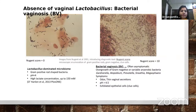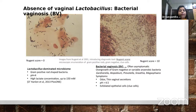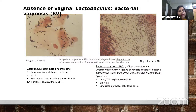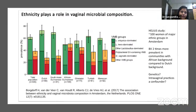On gram stain, gram-positive lactobacillus thin rod separate structures are seen in normal microbiome (slide A), while bacterial vaginosis shows gram-negative organisms (slide B). In lactobacillus-dominated microbiome, pH is less than 4.5 and there is high lactate concentration. In bacterial vaginosis by Amsel's criteria: thin homogenous odorous vaginal secretion, possibly white-gray, pH more than 4.5, and presence of clue cells (exfoliated epithelial cells). Ethnicity also plays a role — African background shows more prevalent bacterial vaginosis compared to other groups.